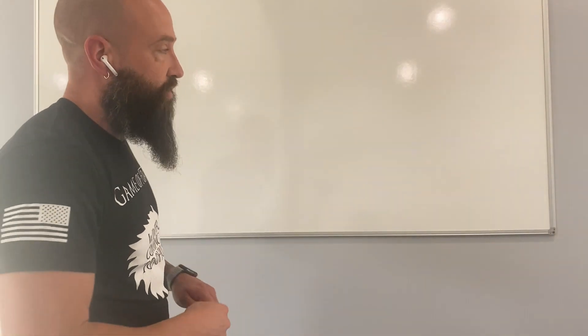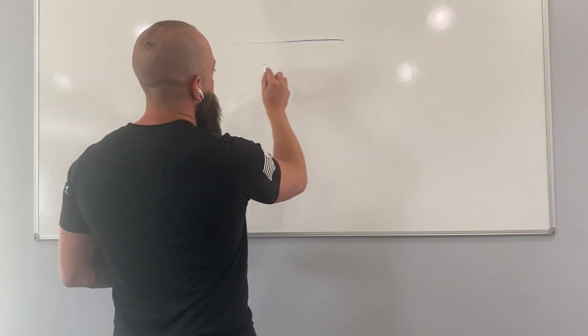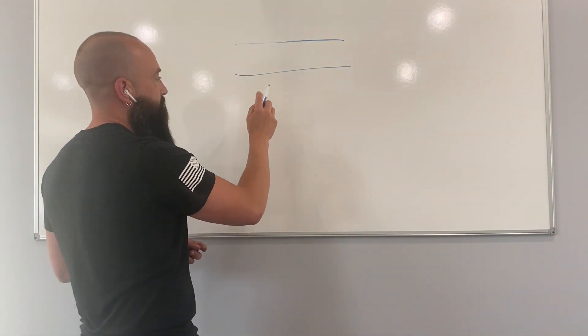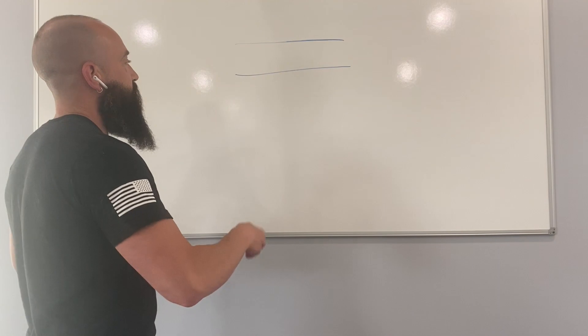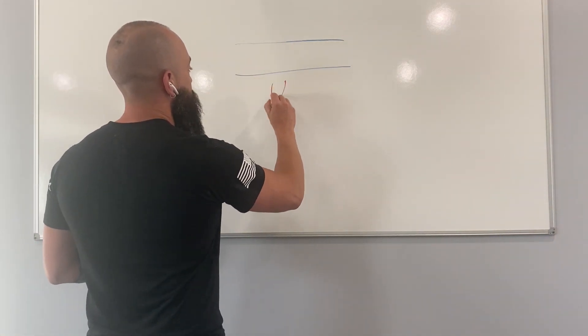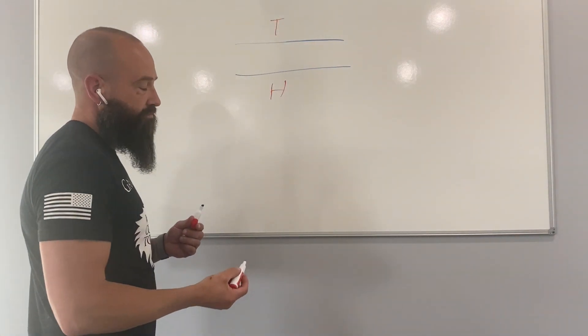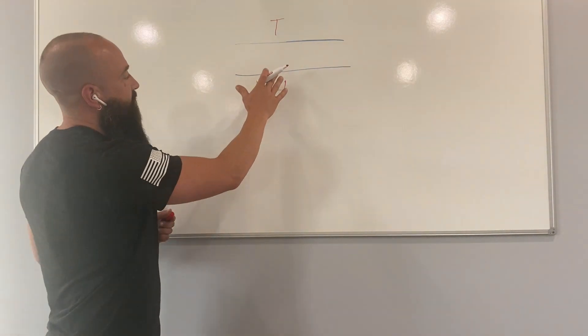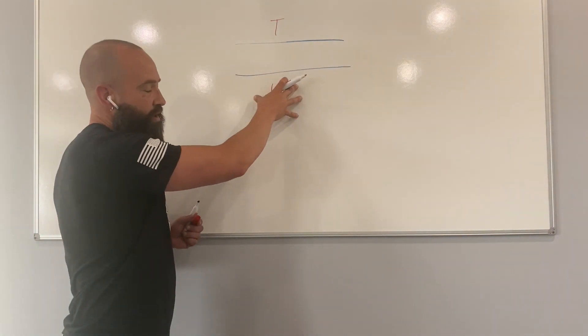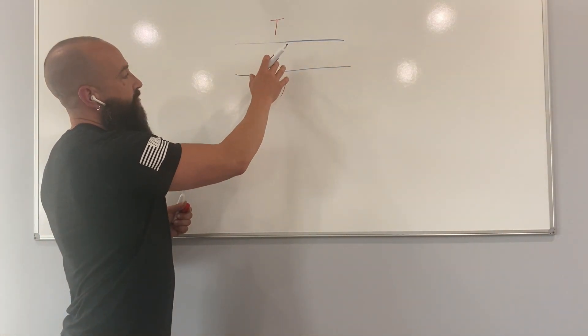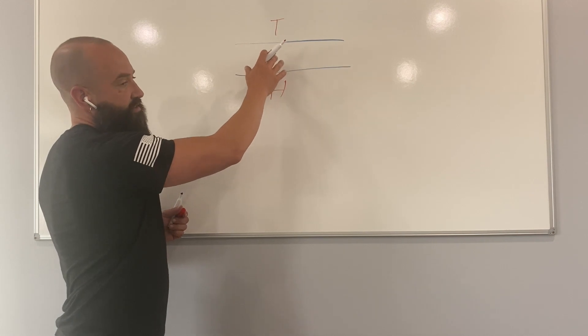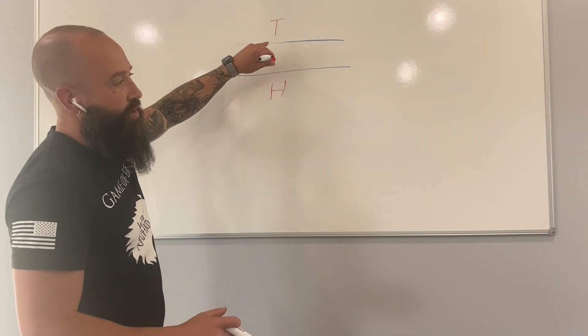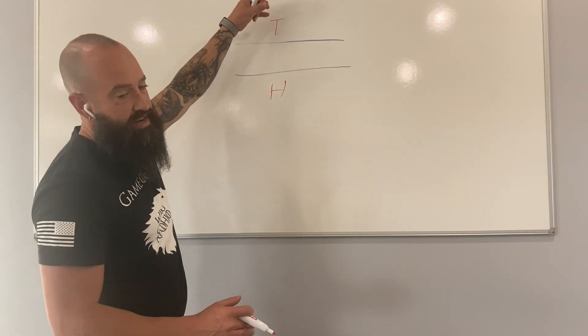So when we're going to test for R value typically what they do is you'll have your insulating medium again. You'll have a heat source on the one side and you will have the temperature probe on the top side. This test is done at 75 degrees and once this heat is put here, say it's 120 degrees, the test does not start until the insulation is fully saturated with the heat from the heat source. Then at that point they see how many degrees it resists.